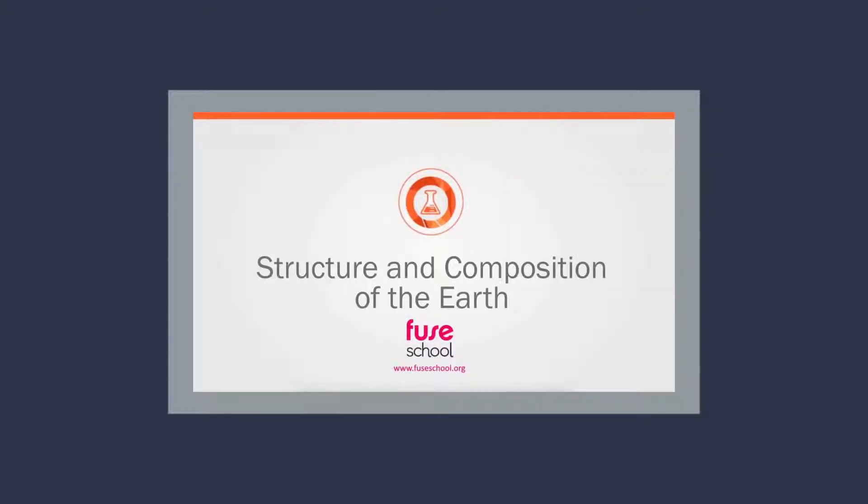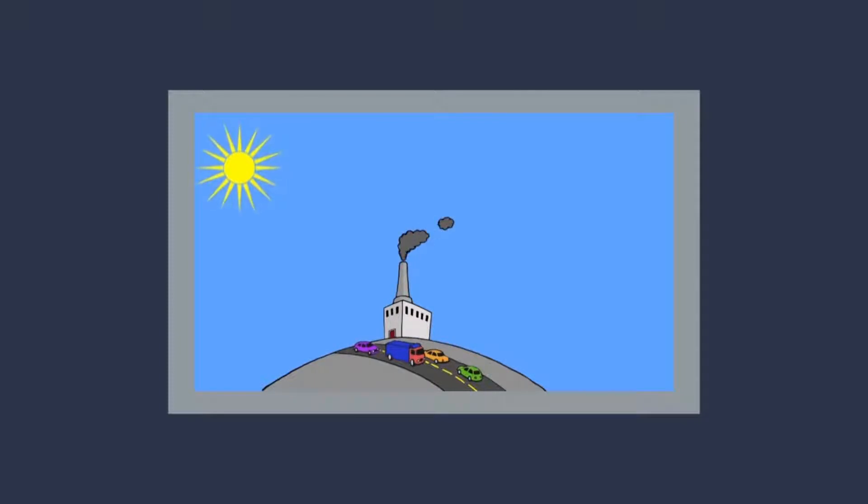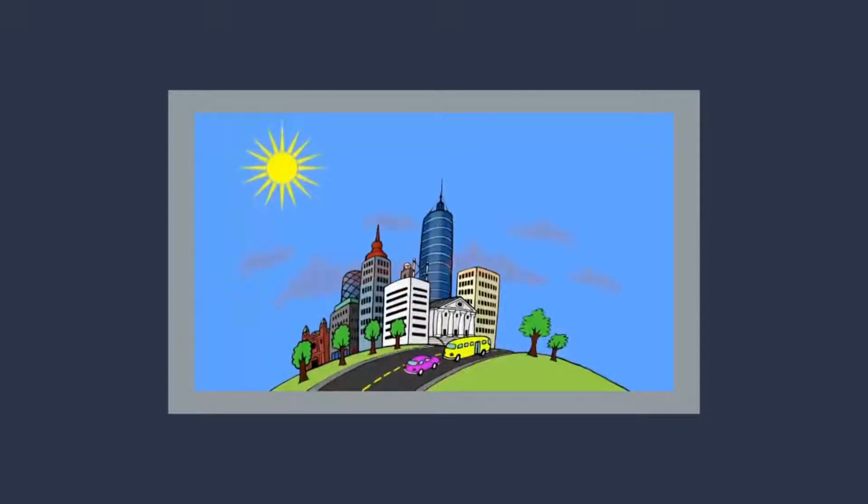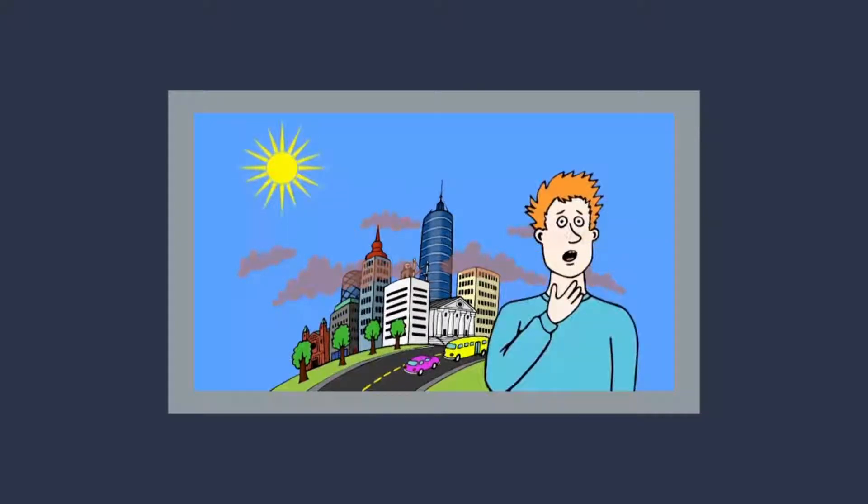Ozone is also present in the troposphere, formed mainly by the action of sunlight on pollution from motor vehicles. Here it helps to form photochemical smog and is a pollutant.